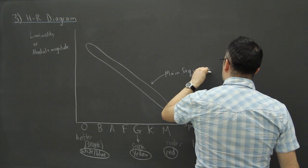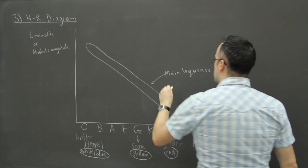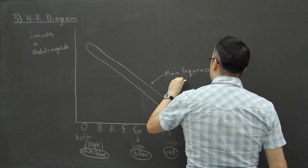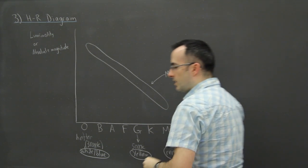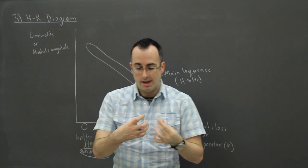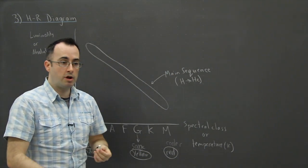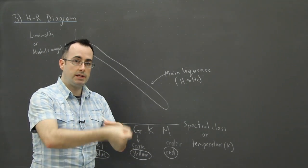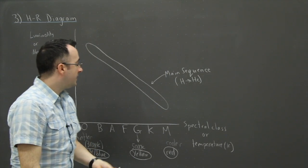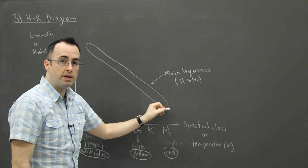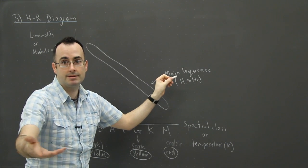So what this means is that this is called the main sequence. This is where most stars, where stars spend most of their lives. So this is when they convert hydrogen to helium. This is when they're happily just burning away, they've got hydrogen in their core, and they're converting it, it's a nuclear fusion reactor. They're constantly converting hydrogen to helium, gives off lots of light. And stars spend the vast majority of their life in the main sequence. That's why we call it main sequence.